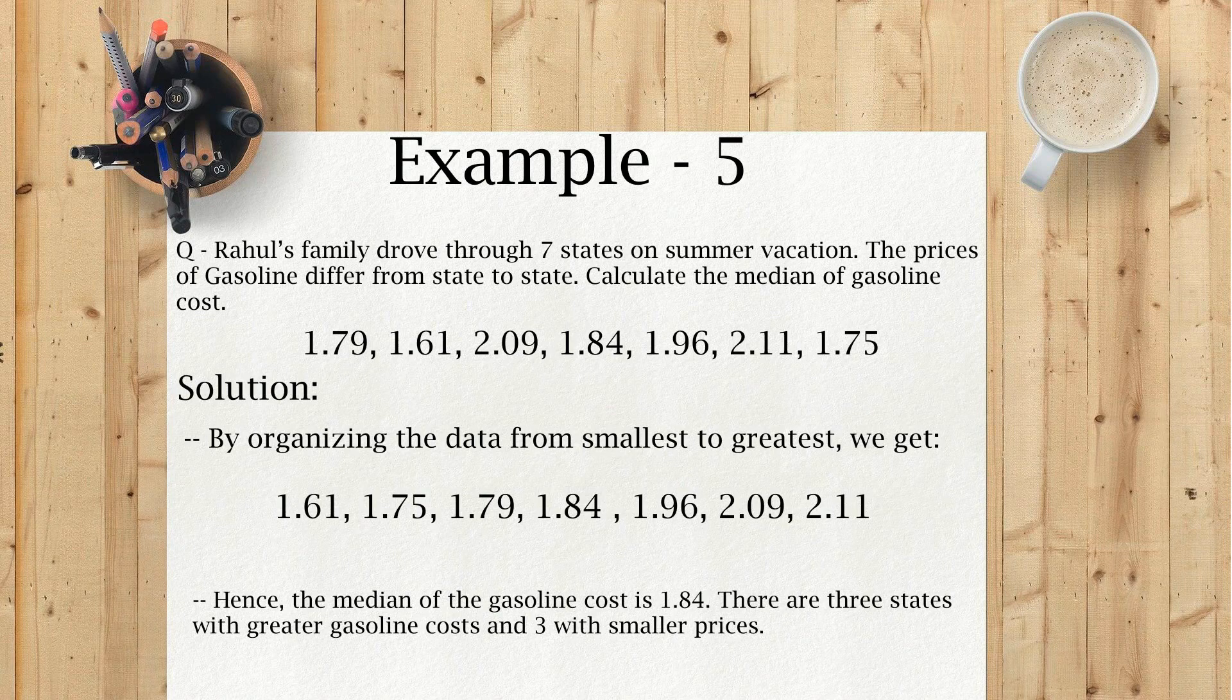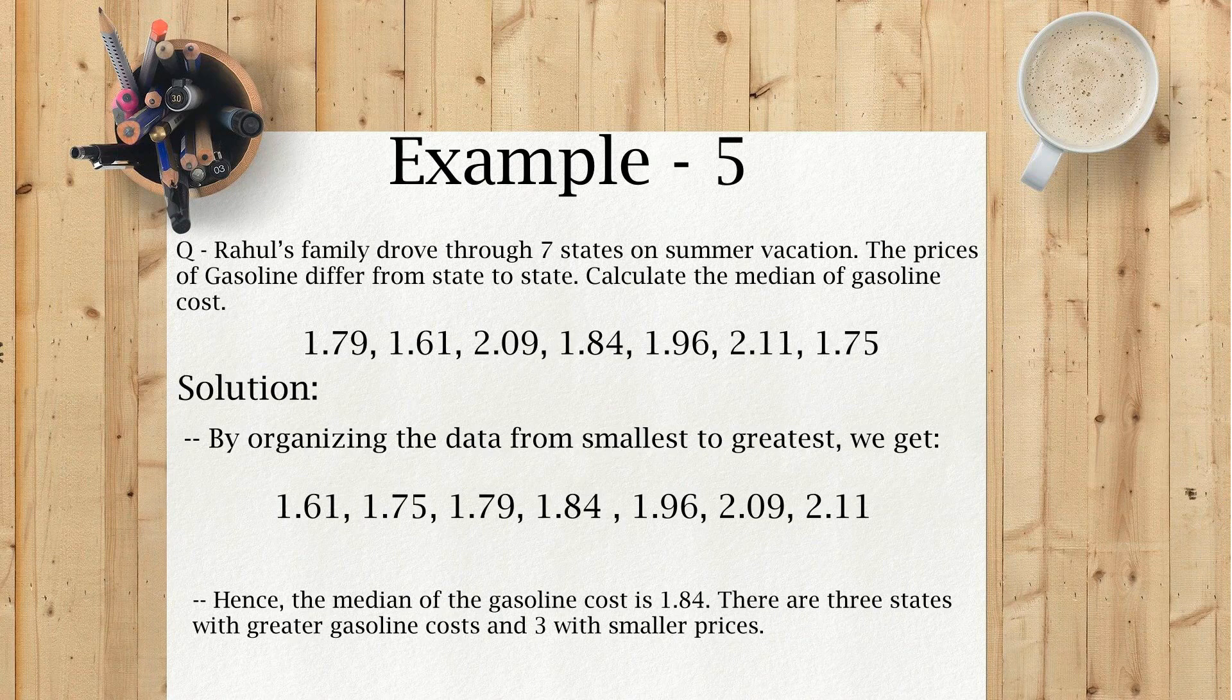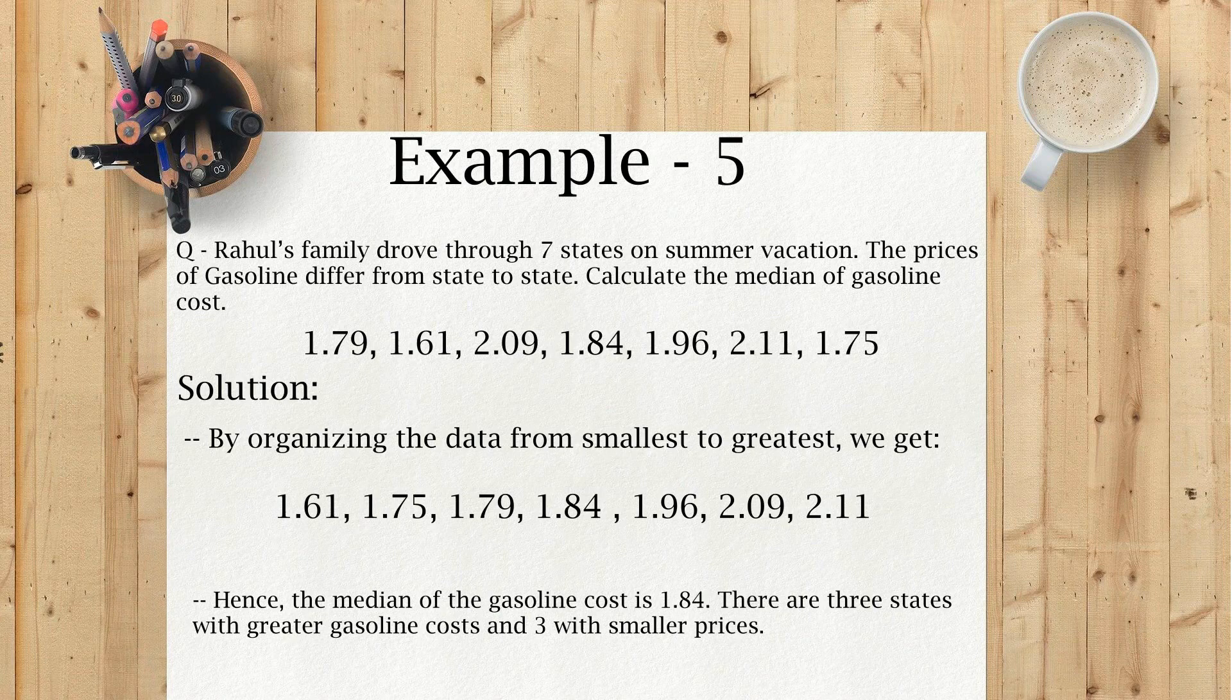Solution. By organizing the data from smallest to greatest, we get: 1.61, 1.75, 1.79, 1.84, 1.96, 2.09, 2.11.